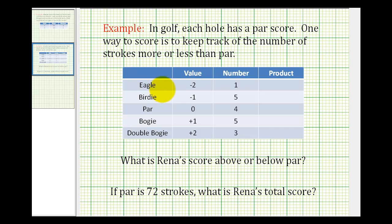An eagle is two strokes below par, therefore has a value of negative two. Rena had one eagle.